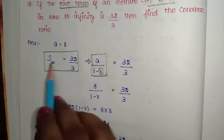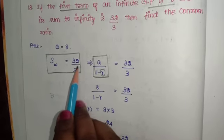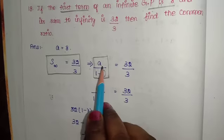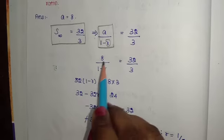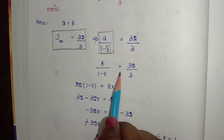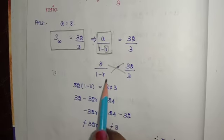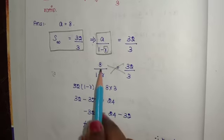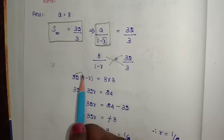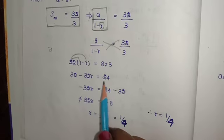So a/(1-r) = 32/3, which means 8/(1-r) = 32/3. Cross multiplying: 32(1-r) = 8×3. This gives 32 - 32r = 24.